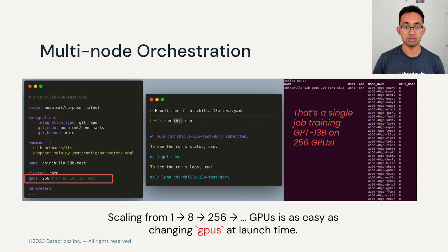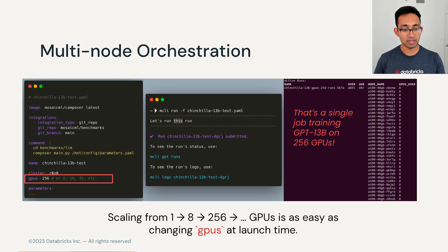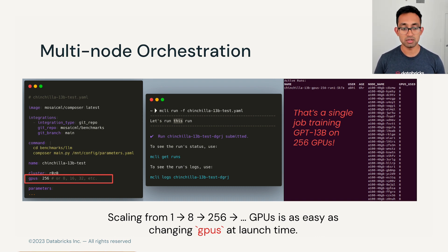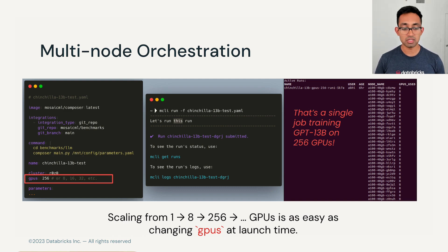Here you can see a multi-node training job submission via the MosaicML Cloud. On the left side you can see the actual YAML file that a user submits. There's a Docker image, an integration for checking out a GitHub repo with your source code, and then it's really just a series of training run commands. The magical part is that you can submit this to any cluster in your account and seamlessly scale the number of GPUs — whether it's one, eight, or 256 — and it all just works.